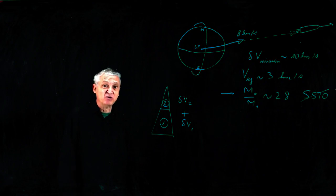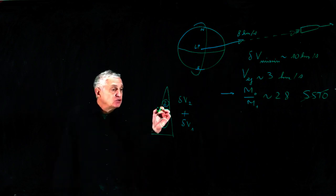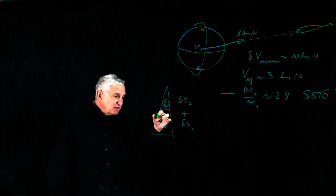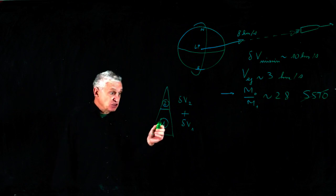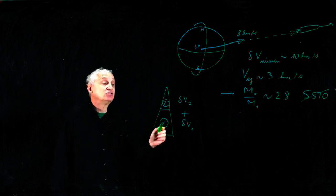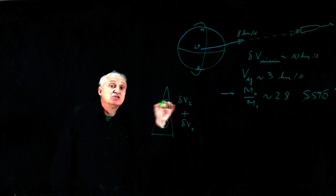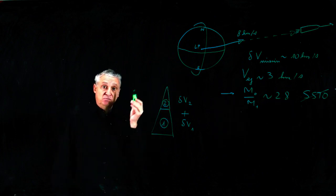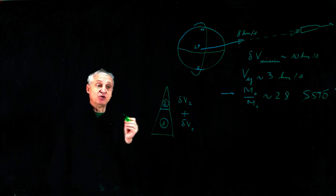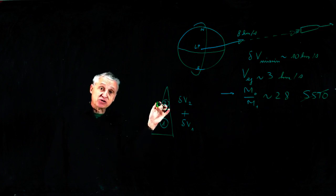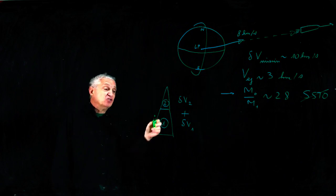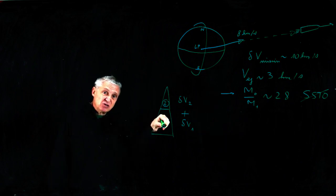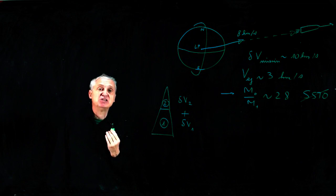But Houston, now we have a problem. Because the first stage has to carry the second one, of course. So at the end of the burn of the first stage, the empty mass is not the mass of the first stage. It's the mass of the first stage empty, but with the second stage full. So the performance of the lower stage is much worse than the performance of the second one. So the lower the stage is, the rougher and the heavier it is.